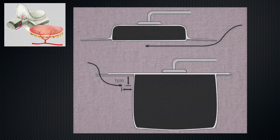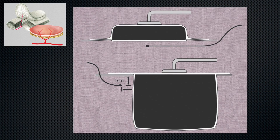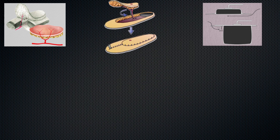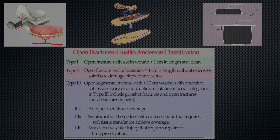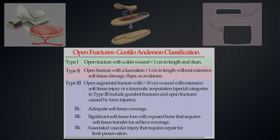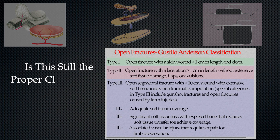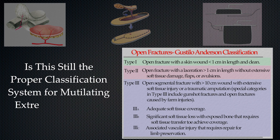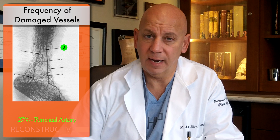More importantly, in 2012, with our armamentarium of perforator flaps, negative pressure dressings, propeller flaps and the like, is the Castillo-Anderson classification — that's over 30 years old — the proper classification for mutilating extremity injuries?